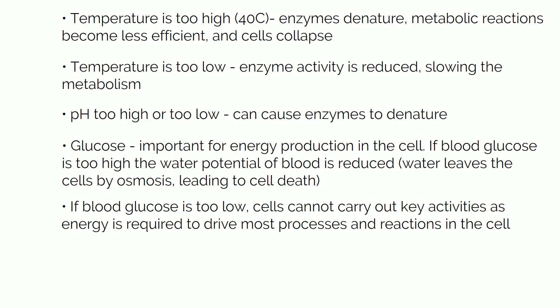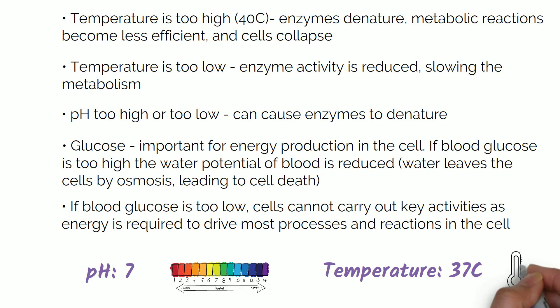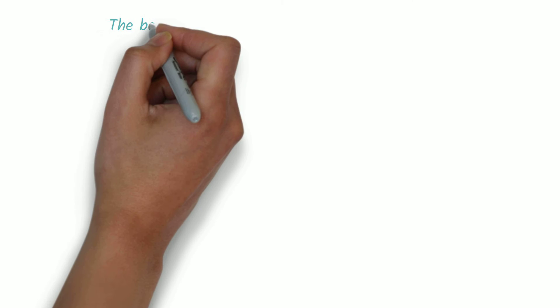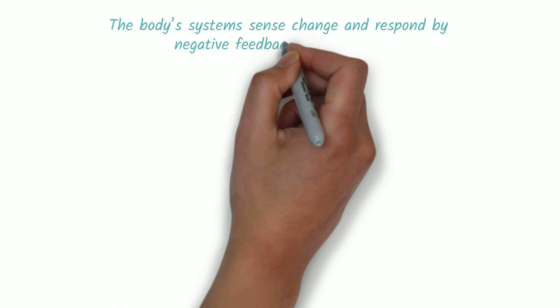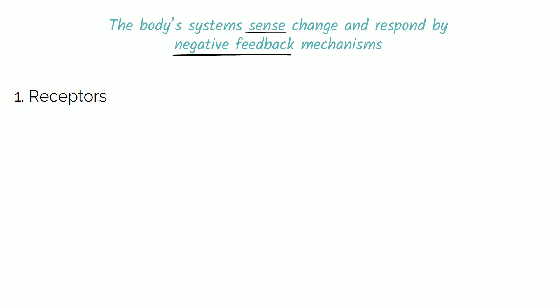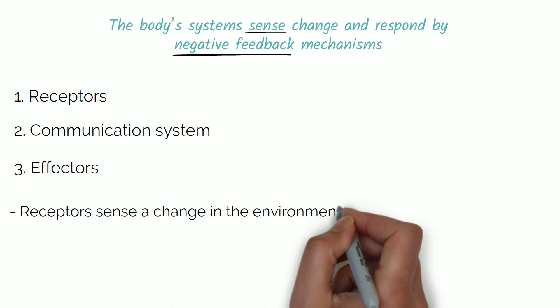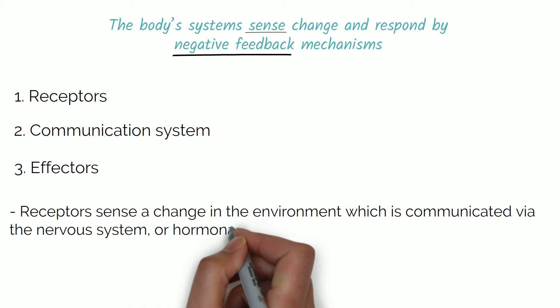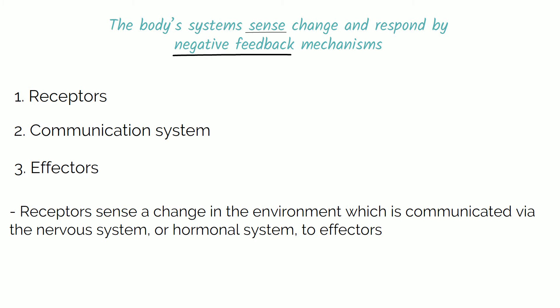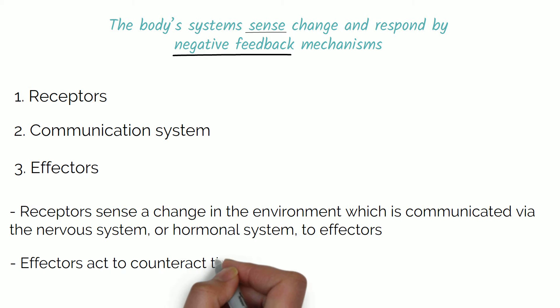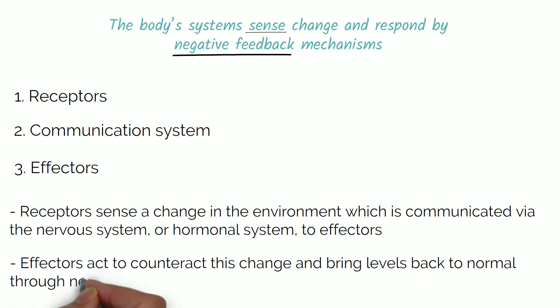The optimal levels for temperature and pH in the body are pH 7 and temperature at 37 degrees. The body systems sense change and respond by negative feedback mechanisms. Key components of these systems are receptors, a communication system and effectors. Receptors sense a change in the environment, which is communicated via the nervous system or hormonal system to effectors.